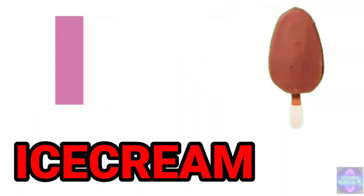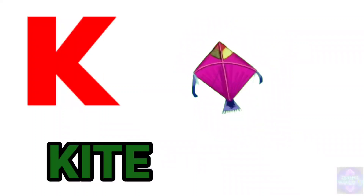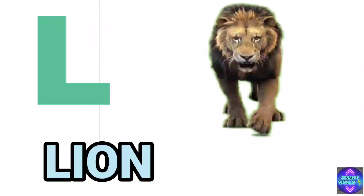I. I for ice cream. J. J for jug. K. K for kite. L. L for lion.